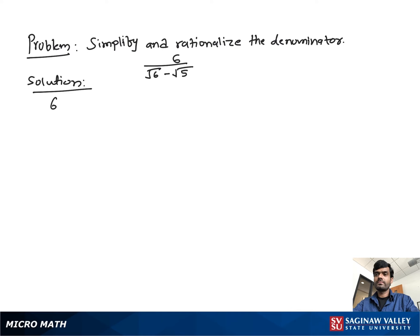Simplify and rationalize the denominator: 6 over square root 6 minus square root 5. As you see, the denominator is in irrational form, so we need to make it rational by removing the radical sign. To do this, we multiply both numerator and denominator by the conjugate of the denominator. Conjugate means changing the positive sign to negative and the negative sign to positive.